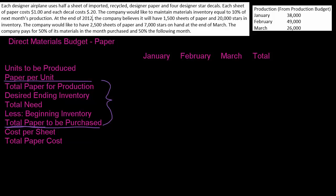This problem actually requires two direct materials budgets — one for the paper and one for the stickers. In the next video, we'll do the second one. Let's go through the information we have from the problem. If you want to download this problem, click the link in the description. Each airplane is going to use half a sheet of paper — basically 0.5 sheets. Right now we're just going to focus on the paper. Each sheet of paper costs a dollar, so there's our cost per unit.